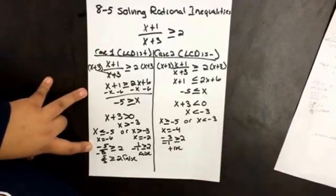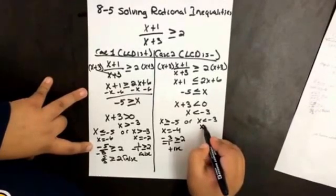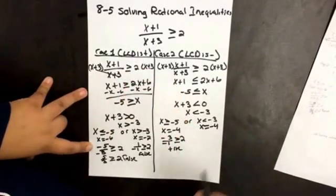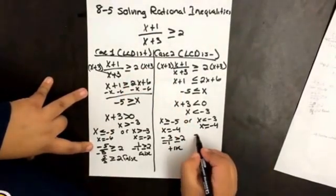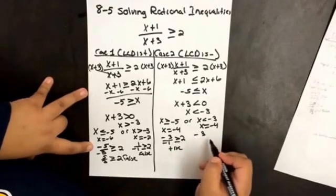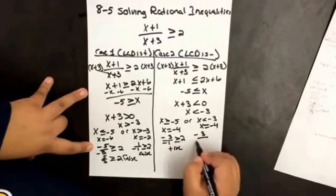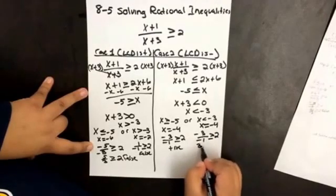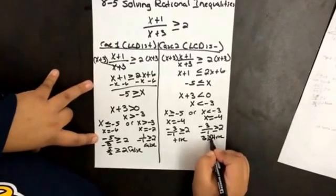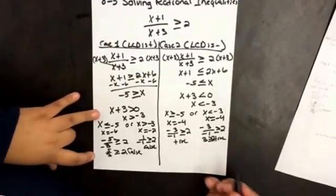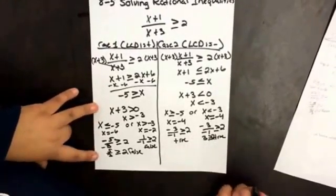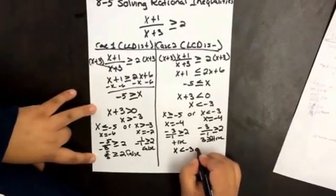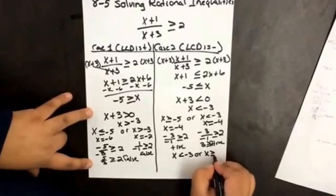What about x less than negative 3? What if we test x equals negative 4? When we plug it back into the original inequality, we get negative 3 over negative 1. Is that greater than or equal to 2? Yes, that's true. So for our solution, we have that x is less than negative 3 or x is greater than or equal to negative 5.